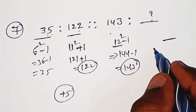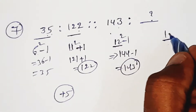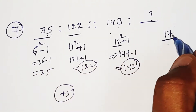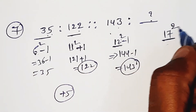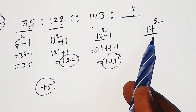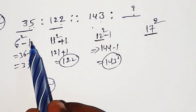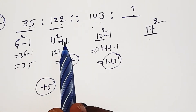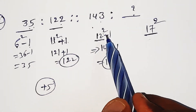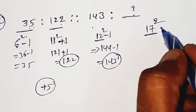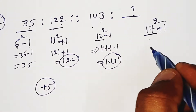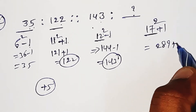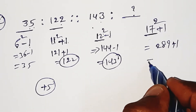Plus 5 from 12 is 17. So we have 17 squared, which is 289. 289 plus 1 is 290. 290 is the missing number.